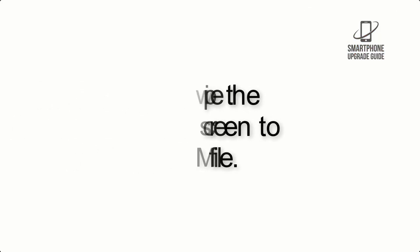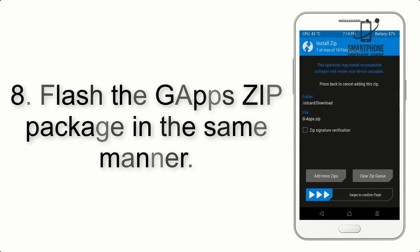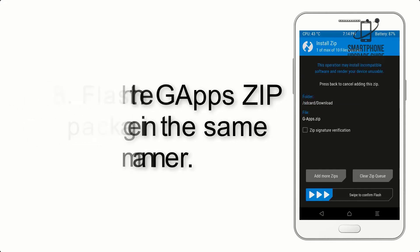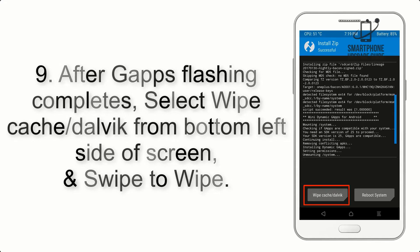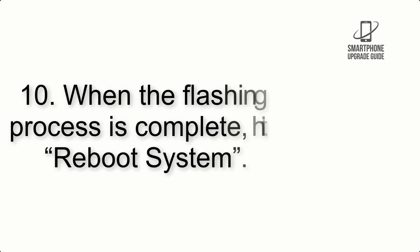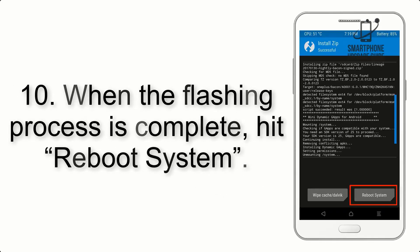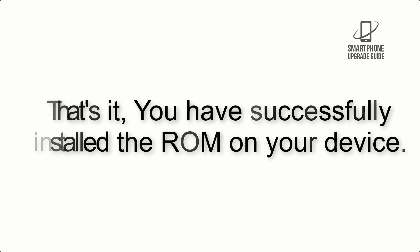Step 8: Flash the GApps zip package in the same manner. Step 9: After GApps flashing completes, select Wipe Cache and Dalvik from the bottom left side of the screen and swipe to wipe. Step 10: When the flashing process is complete, hit Reboot System. That's it — you have successfully installed the ROM on your device.